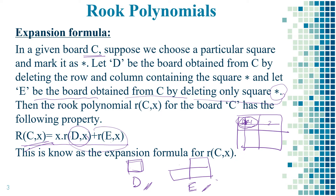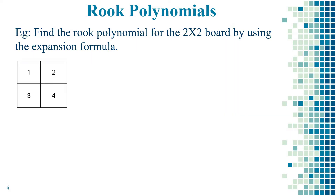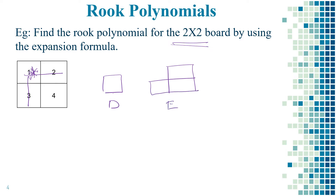Let us understand this concept thoroughly using an example: find the rook polynomial for the 2×2 board using the expansion formula. It is a simple board, taken here to explain the concept thoroughly. We mark one square as asterisk. According to step 1, the corresponding row and column are removed, giving board D which contains only one square. According to step 2, only the asterisk square is removed, giving the resultant board E, which looks like an L-shape with three squares.